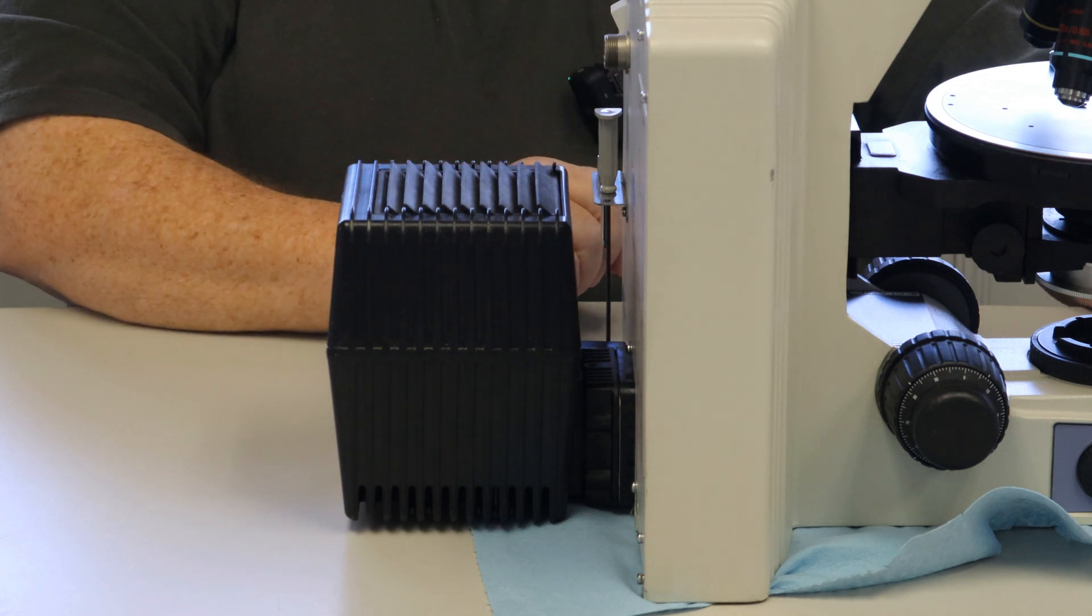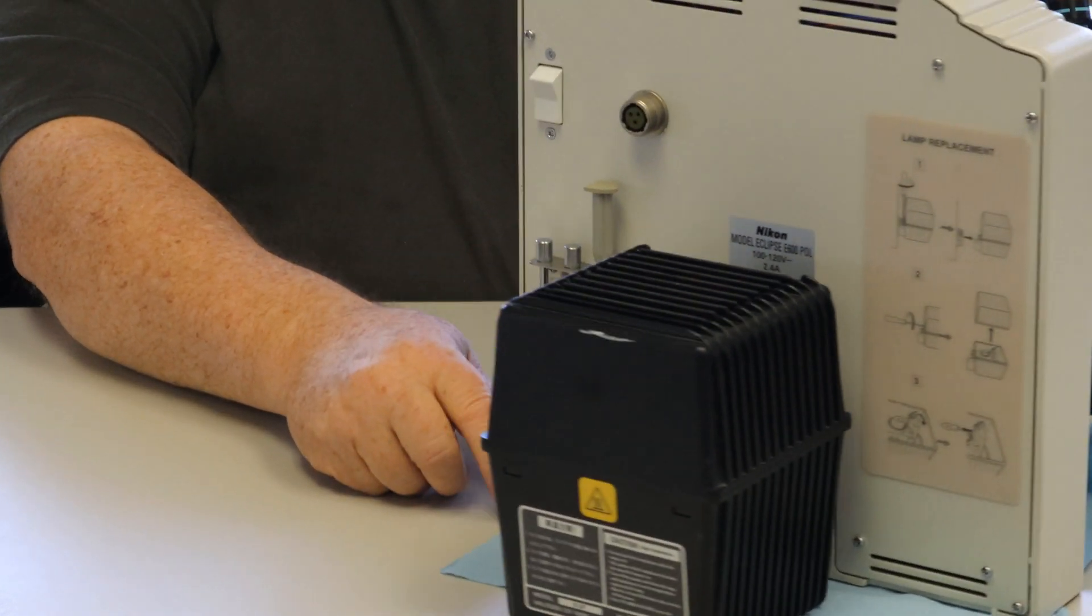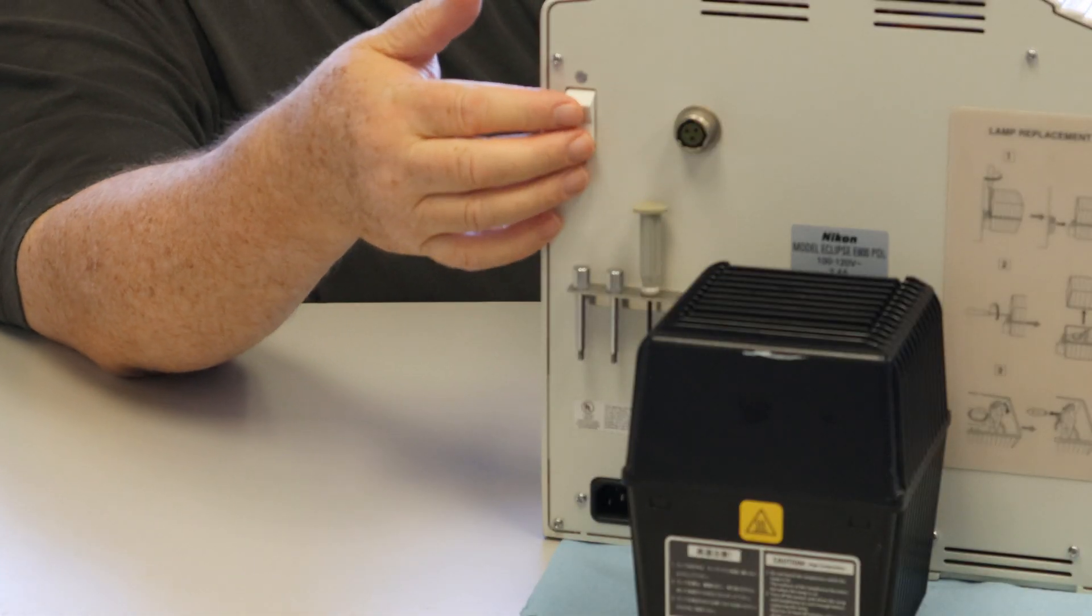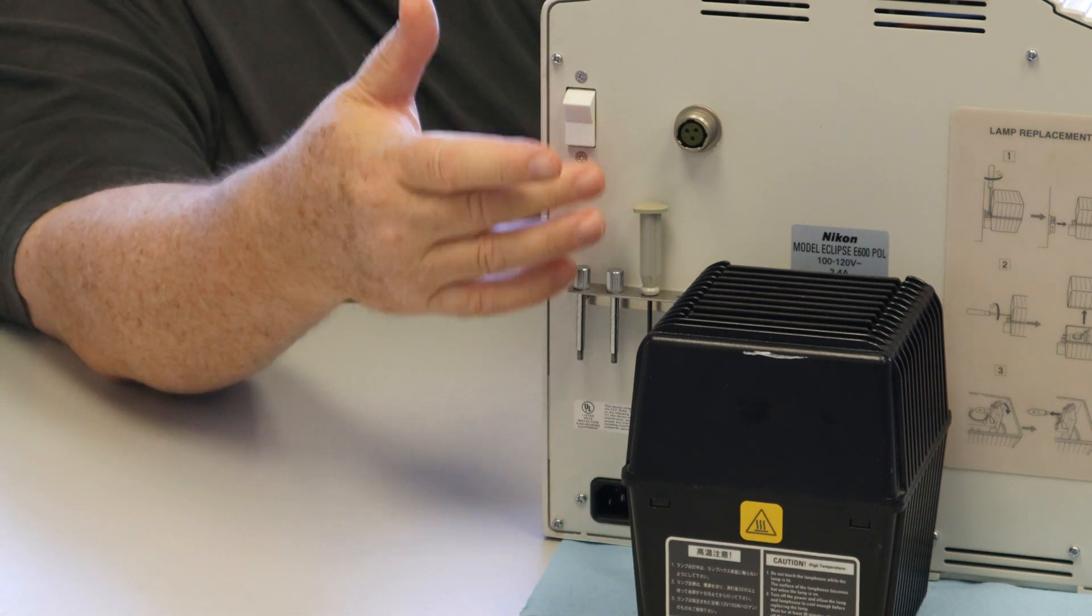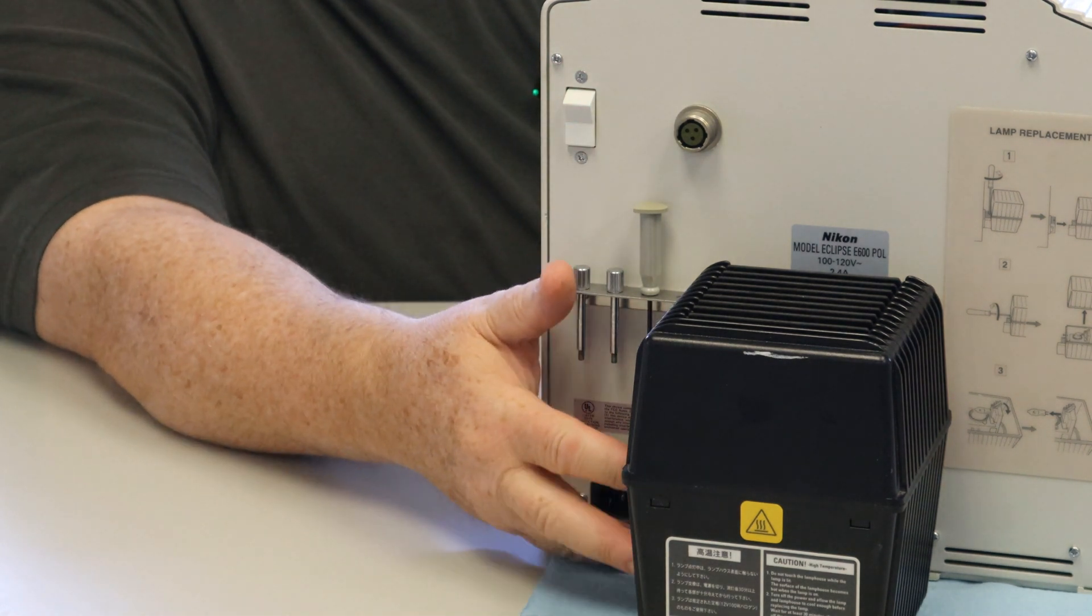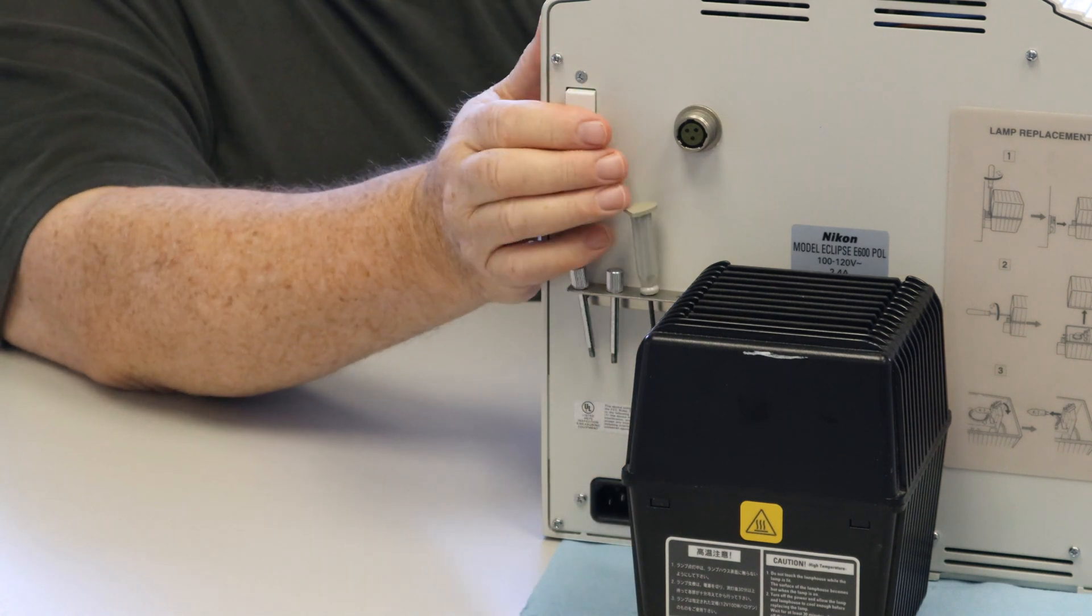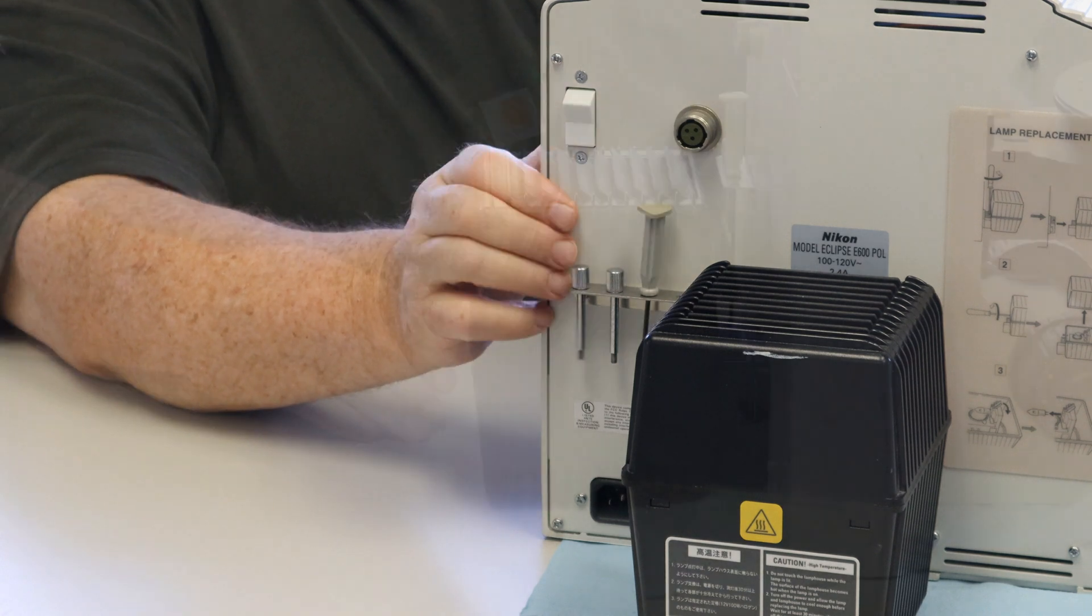If you're trying to diagnose a problem with your microscope, you have a dual lamp source or power source. DIA for your bottom light, or EPI for your top. But today we're just going to concentrate on the DIA.